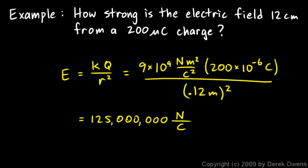You see the 9 times 10 to the 9th. That's different from the gravitational constant, which you might remember was 6.67 times 10 to the negative 11th. A very, very small number. Electrical forces are inherently much, much stronger than gravitational forces.